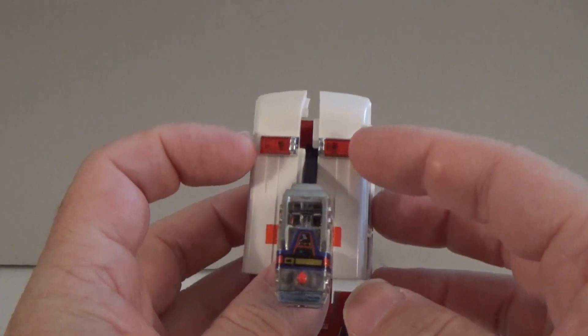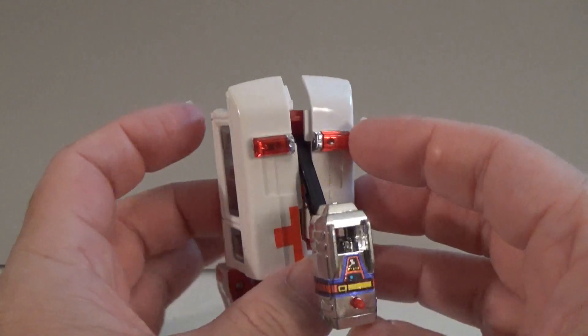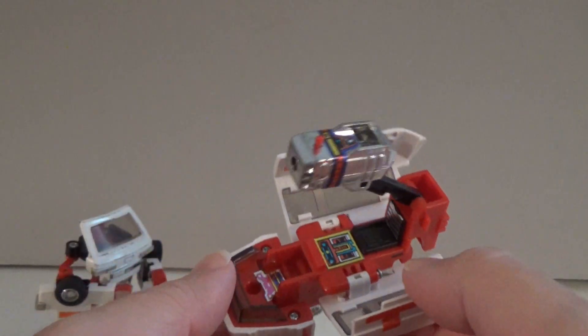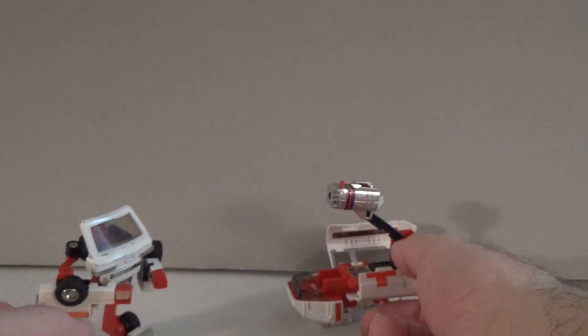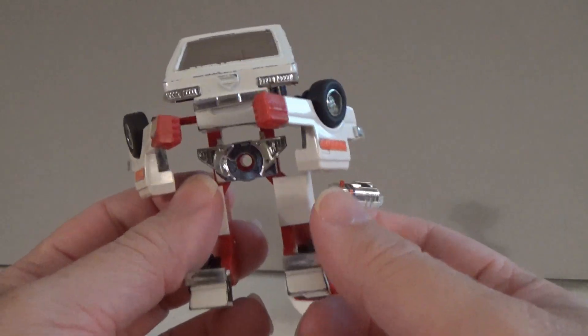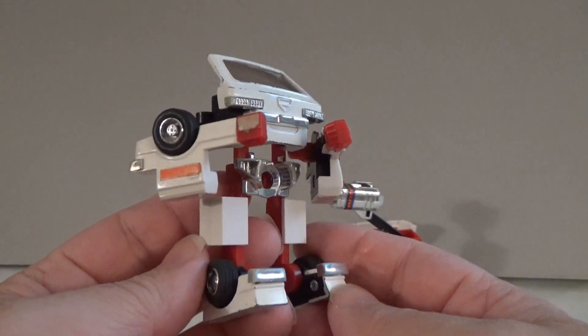Also the little lights here on the top can also be broken off too. So always be careful of that when you are looking for a loose Ratchet figure. Now, here is the robot, the actual robot of Ratchet.